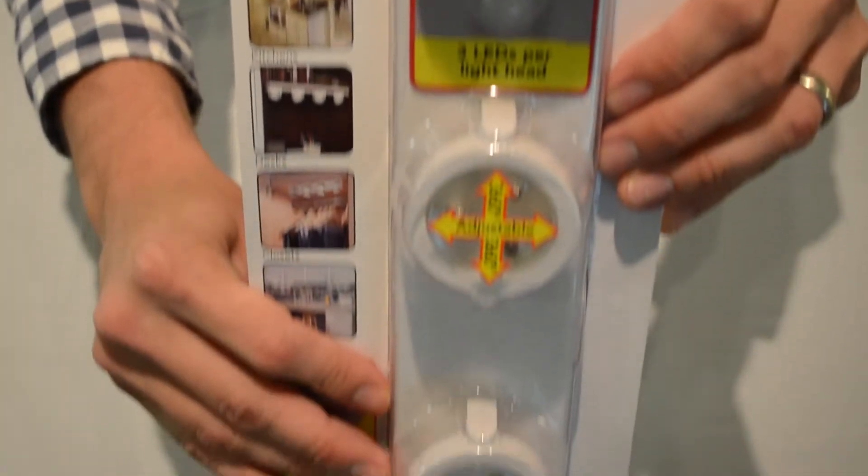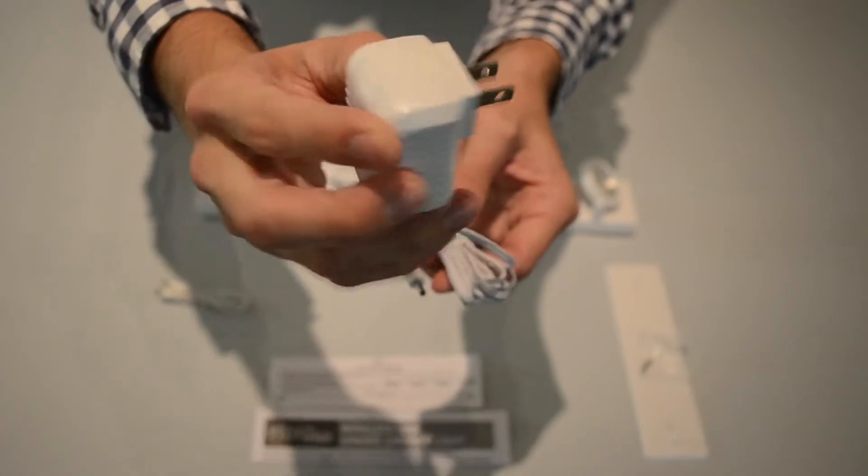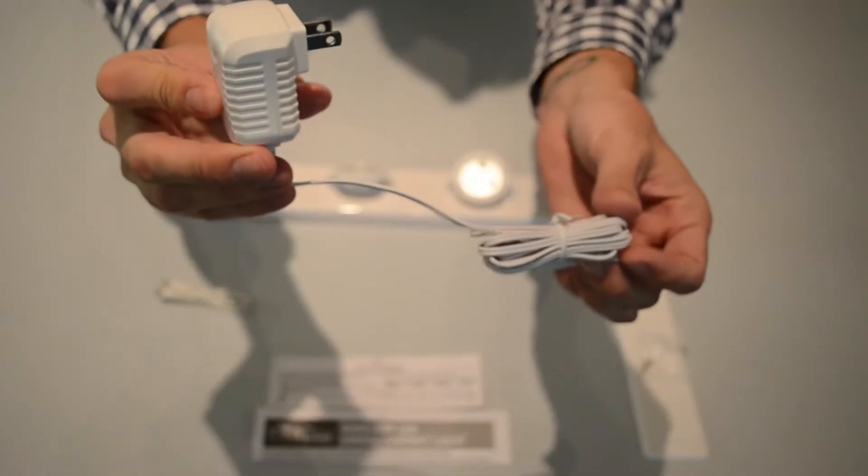The LED battery operated track light with AC adapter can be powered either by 6 AAA batteries or the included AC adapter.